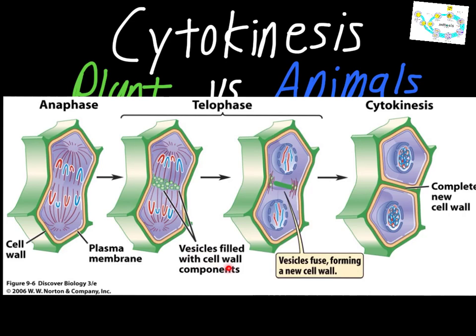The vesicles are filled with what are called cell wall components. The cell wall in plant cells is made out of something called cellulose, and these vesicles are going to start to build up a cellulose barrier. This is referred to as the cell plate — it's a barrier that begins to form from the materials in those vesicles.